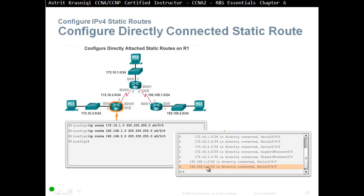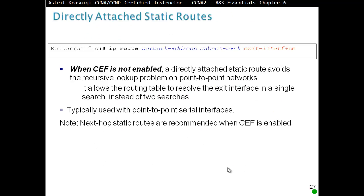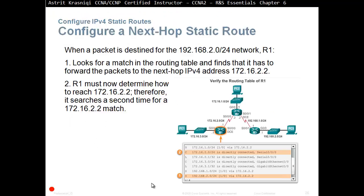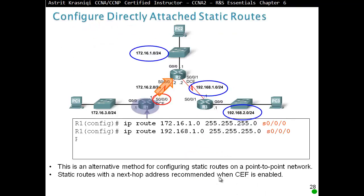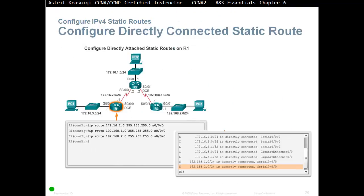To get to 192.168.2.0 it says directly connected, out of S0/0/0. Since it says directly connected, many people will think the administrative distance is 0. But for static routes, AD is always 1, unless you change it because you're creating a floating static route. When using the next hop static route method, it will show the administrative distance of 1 in the routing table.